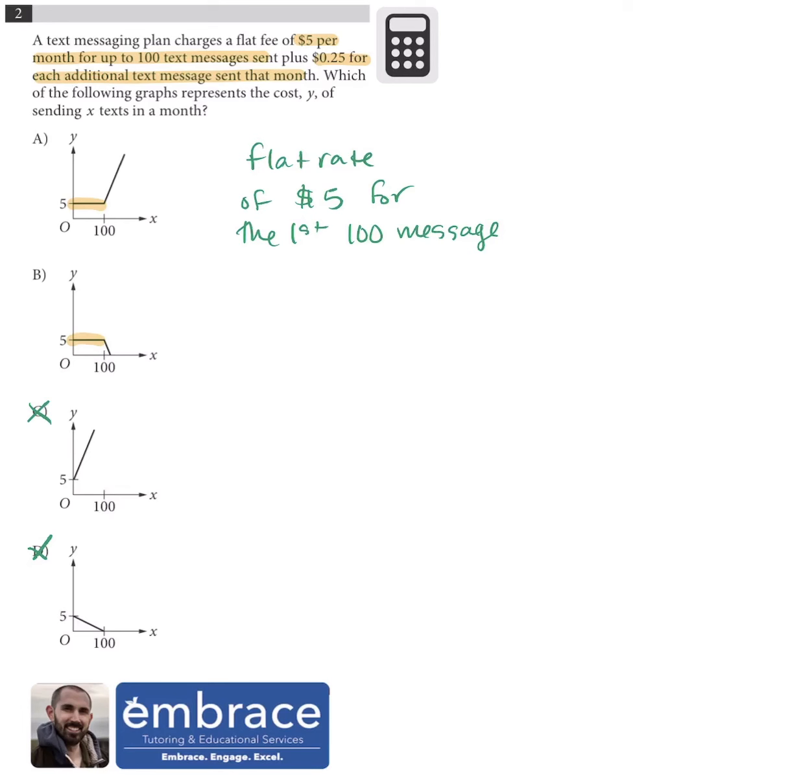And then you end up getting charged 25 cents for each additional text message. So now we have to decide, is that going to be a positive slope or a negative slope? And because the Y value represents the cost, the cost goes up for each additional message. So the slope must be positive. So that's going to be answer choice A.